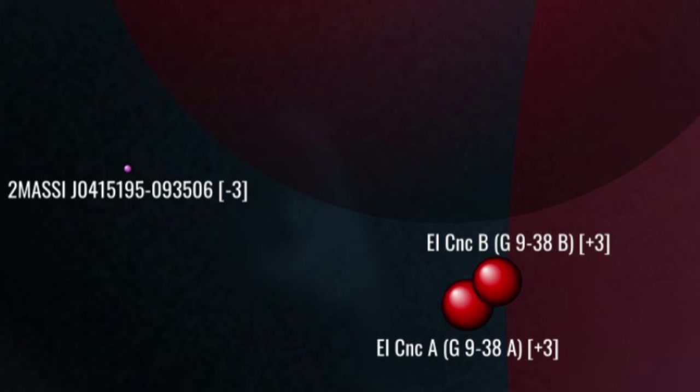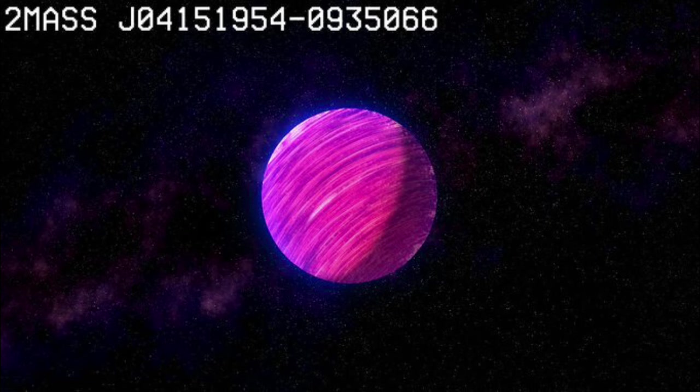Six parsecs south, we arrive at the T-class brown dwarf two mass J0415954 slash 0935066. At around 31 Jupiter masses, and with a surface temperature of 750 kelvins, 415 is so archetypal that it is often used as a standard to compare new discoveries of its type.